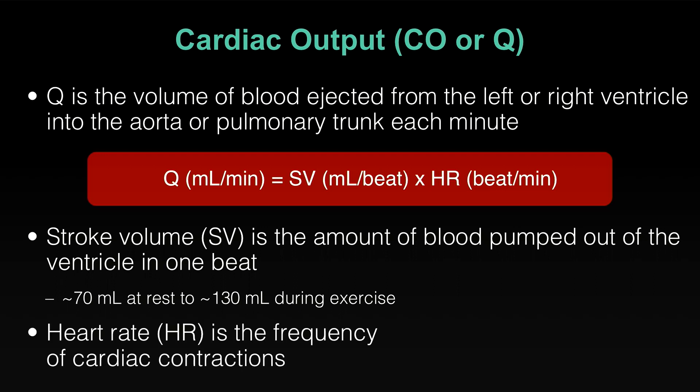Heart rate is fairly straightforward — the frequency of the cardiac cycle, the number of beats per minute. You probably have a good sense of resting and maximum heart rate: maybe 60 or 70 beats per minute at rest, and about 200 beats per minute maximal for you. Maximal heart rate goes down as you age, which is unfortunately true for some of us.